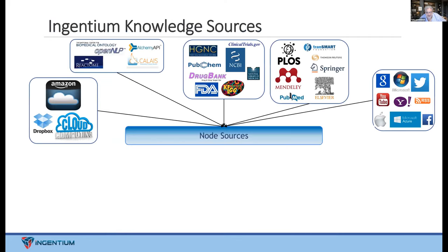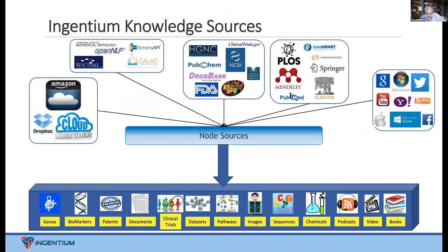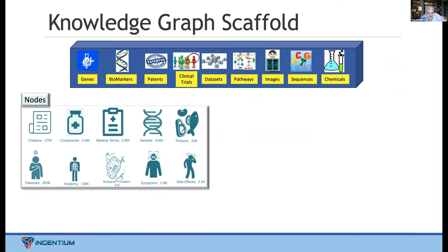We go out and look at a lot of different sources. What we're trying to do is discover nodes — using semantic characterization from a lot of different technologies, trying to map the different sources and identify what are the nouns: the genes, clinical trials, and different concepts. From those we extract genes, biomarkers, pathways, and all the different bits out there. We've been able to pull out quite a few from public sources — compounds, medical terms, symptoms, side effects — ending up with about 35 different node types on the order of 34–35 million nodes.